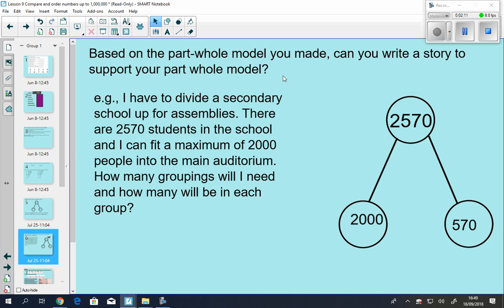Can you write a story to support the part-whole model you made in the last slide? So here's an example. I have to divide a secondary school up for assemblies. There are 2,570 students in this school, and I can put a maximum of 2,000 people into the main auditorium. How many groupings will I need, and how many will be in each group? So I need two groups: 2,000 can be in one, 570 can be in another. That's a part-whole model story.